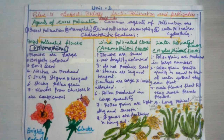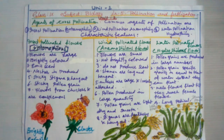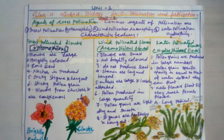An example of a water-pollinated flower is Vallisneria. Examples of insect-pollinated flowers are rose, jasmine, and hibiscus. Examples of wind-pollinated flowers are maize, grass, and rice.